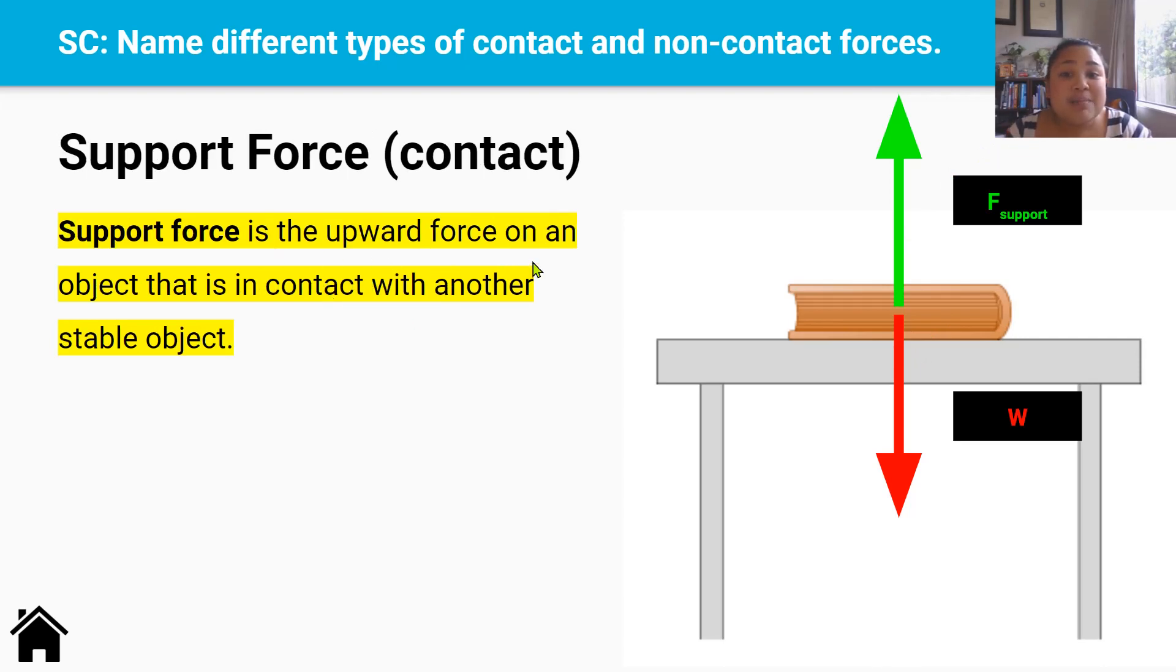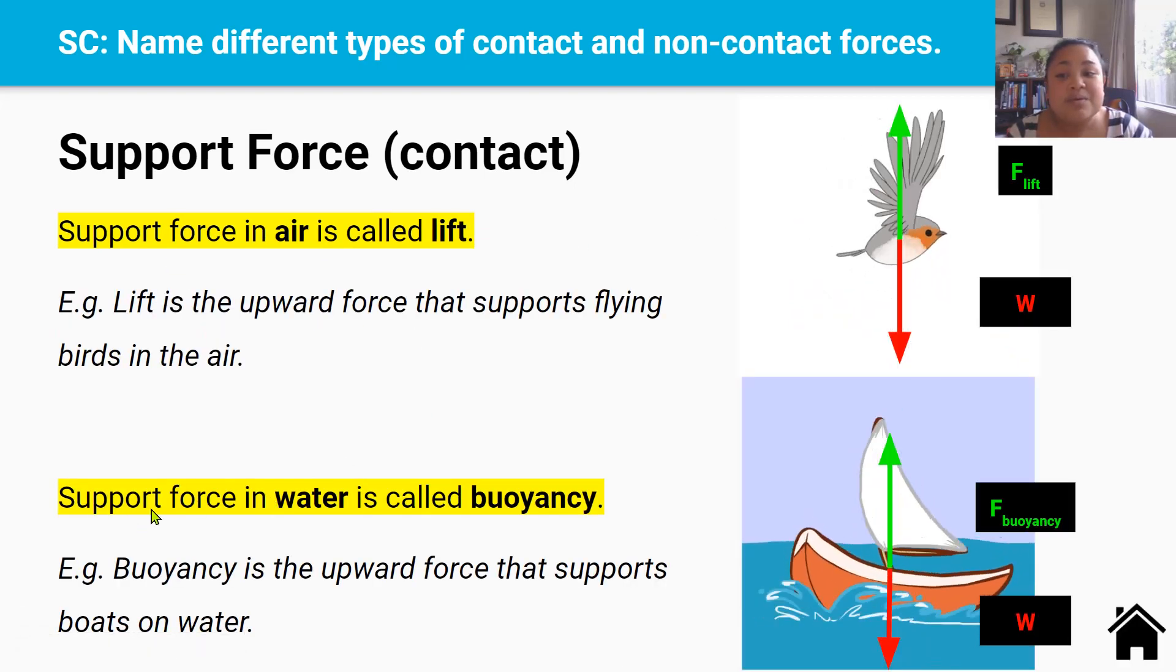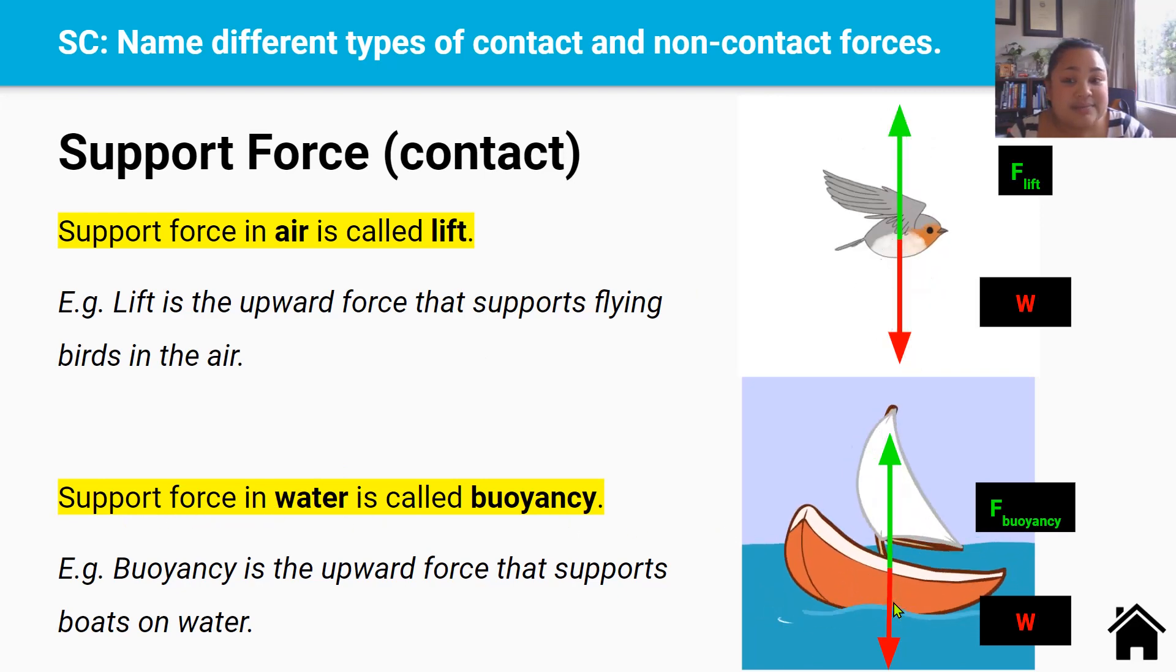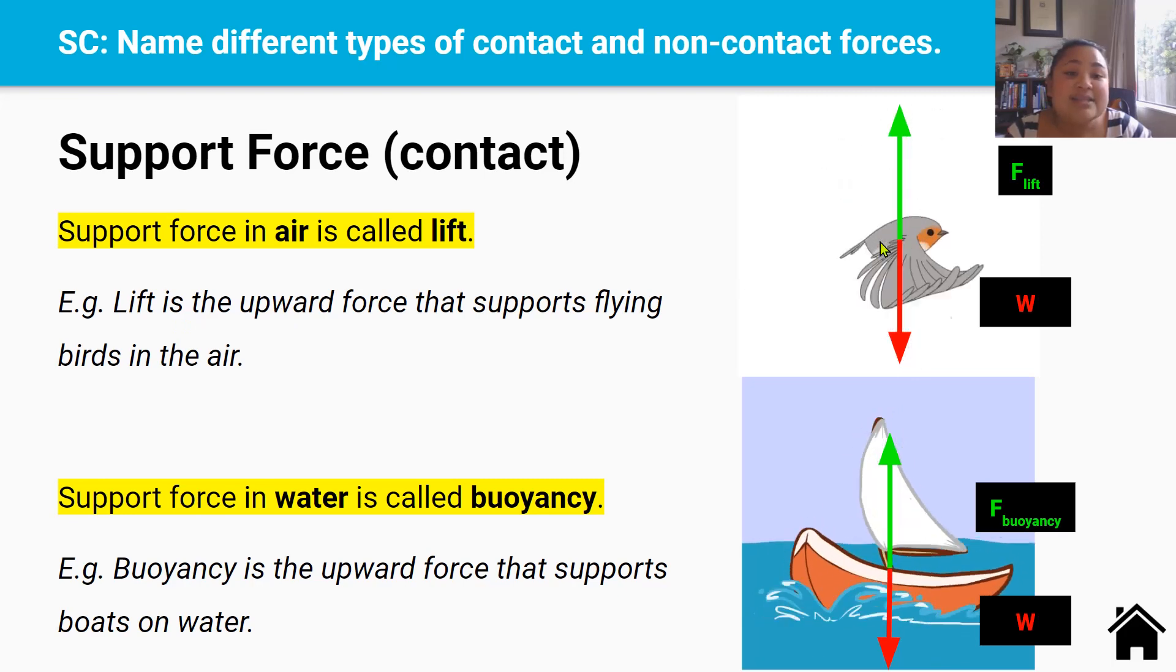Whereas support force is the upward force on an object that is in contact with another stable object. So this book is on a table. If the table wasn't there, the book would fall to the ground. That's because the table is exerting, it's giving off an upward force onto this book. This table is a stable object, and it's giving an upward force to the book that it's in contact with, and that makes sure the book doesn't fall through the ground. Now support force in air is called lift, but support force in water is called buoyancy. So an example of lift is the upward force that keeps this bird flying in the sky, it supports it. Whereas an example of buoyancy is how this water is keeping boats afloat on water.